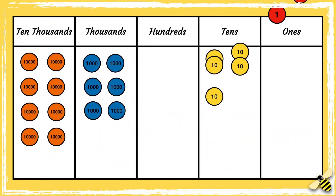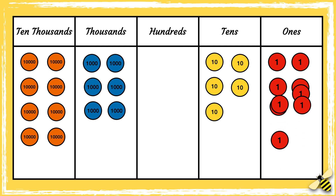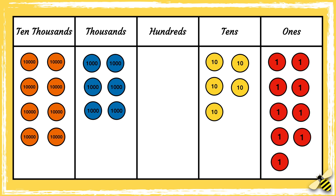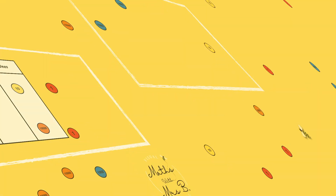Now it's your turn. What number is shown in the place value grid? Let me know your answer in the comments section.